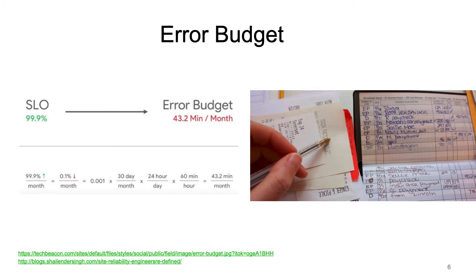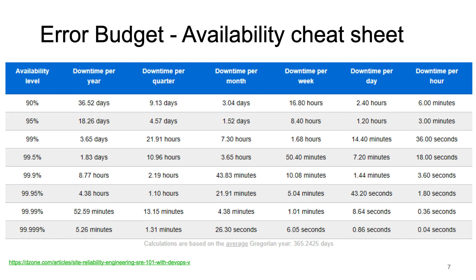Let's take an example. An SLO of 99.9% means a system should be available 99.9% of the time. In a month of 30 days, this means 0.1% downtime, which equals 0.001 × 30 days × 24 hours × 60 minutes per month — which translates to 43.2 minutes per month. This means the system can go down for up to 43.2 minutes in a month; anything above is unacceptable.